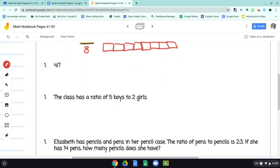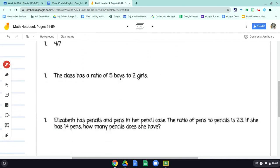Now we have our first word problem here. The class has a ratio of 5 boys to 2 girls. So I'm going to do the same thing. 5 boys to 2 girls. I'm going to represent boys with blue pieces of tape. 1, 2, 3, 4, 5. And then girls I'm going to use green. 1, 2.